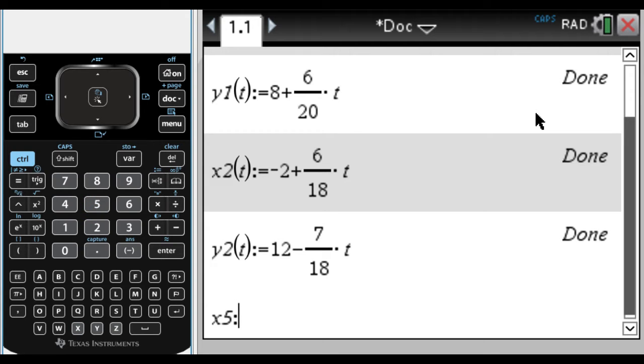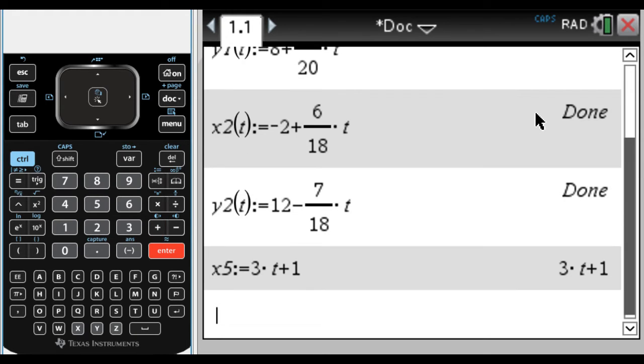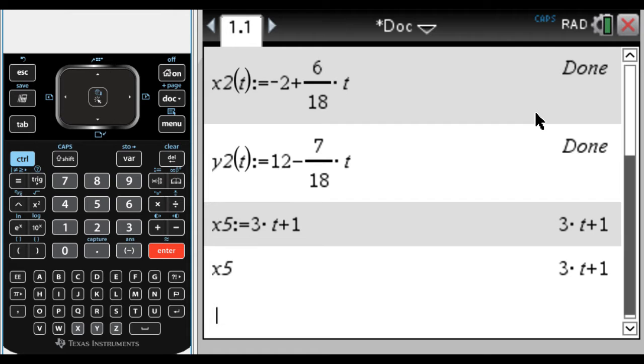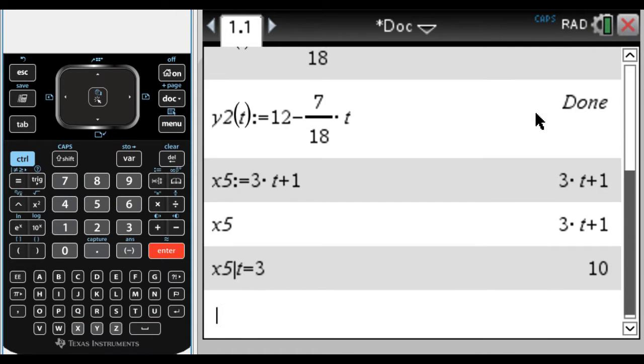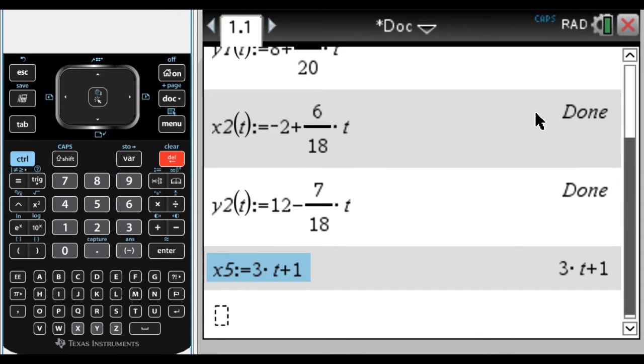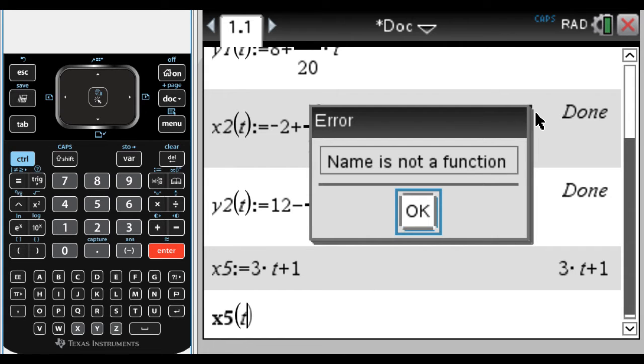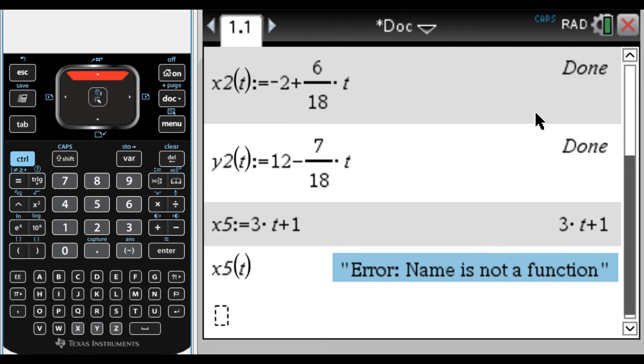So say I want to define x5, people will forget to say of t. So they'll just define x5 colon equals 3t + 1. The calculator doesn't actually say done there, it hasn't stored a function, it's just stored an expression. So x5 will come up, but the calculator doesn't really know what to do with this as a function. So when you try to do something like x5 of t, it'll say name is not a function.